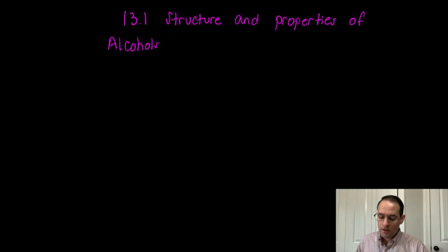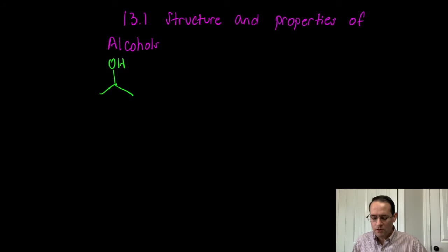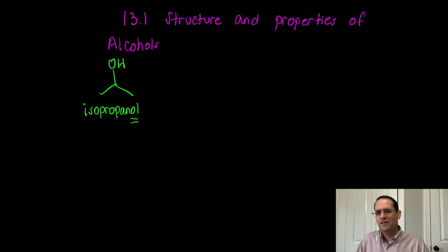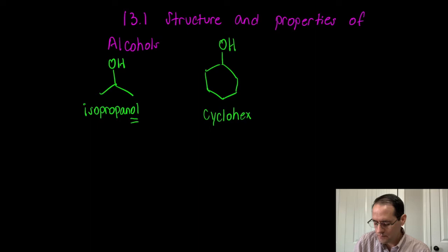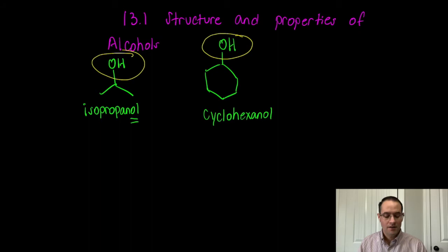Let's talk about the structure and properties of alcohols. Alcohols have an OH group in the molecule. This is isopropyl alcohol, or 2-propanol. We will see how the systematic IUPAC names of alcohols always end in -ol. Another example would be this molecule here — you can see it contains the OH group — and this is cyclohexanol. This is the functional group we're looking for in alcohols.